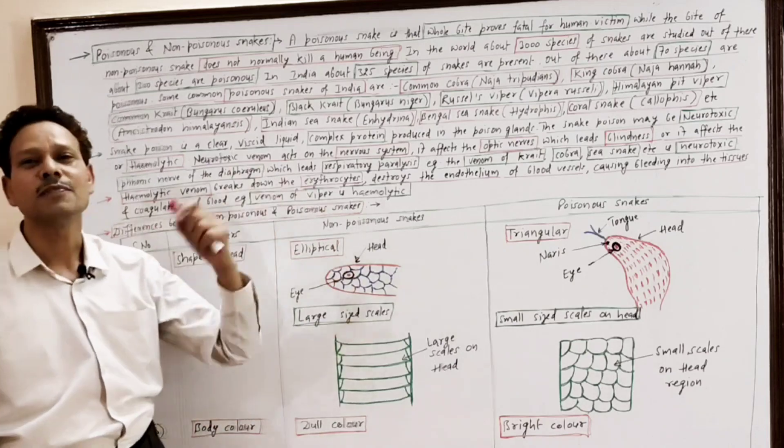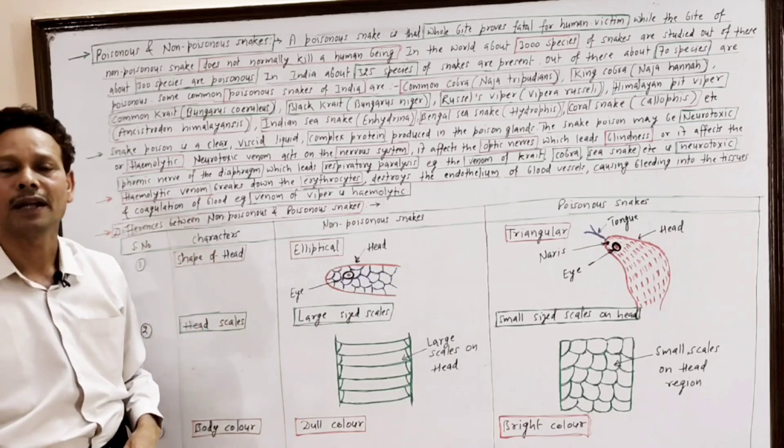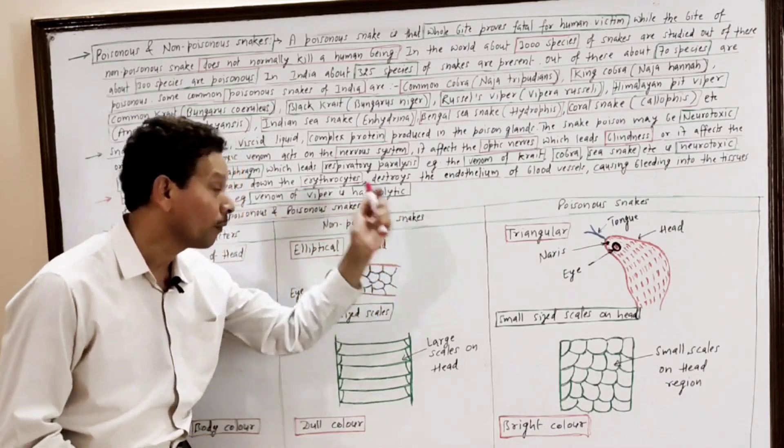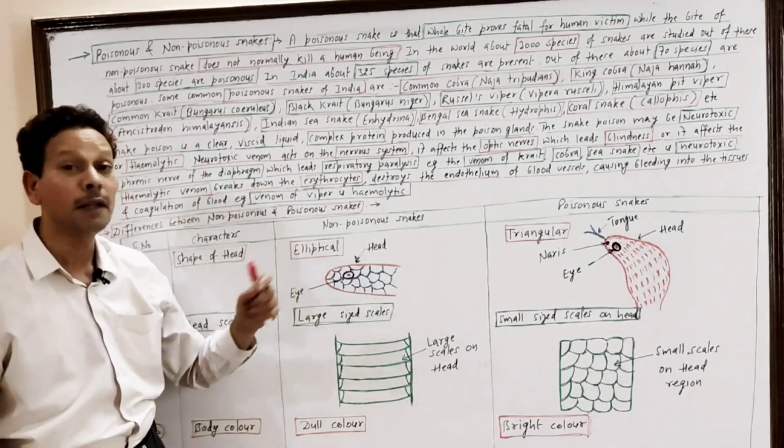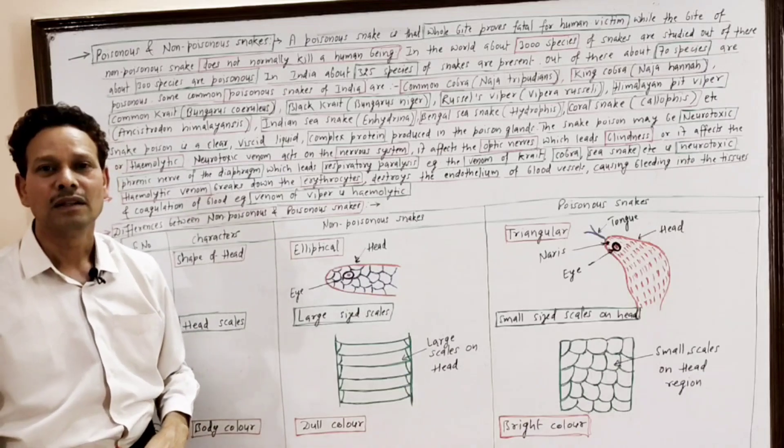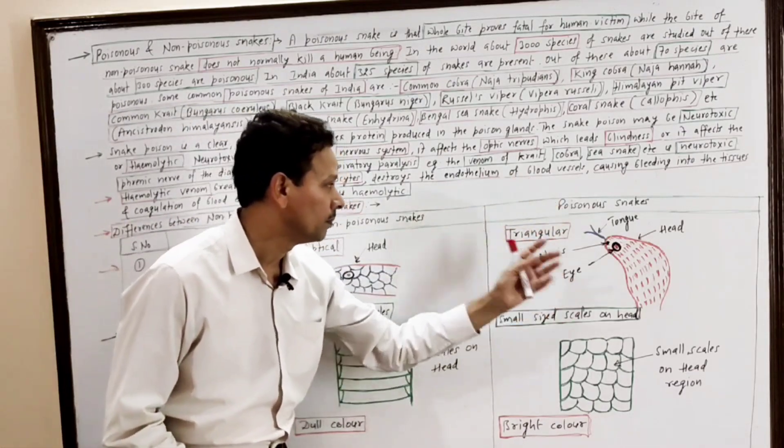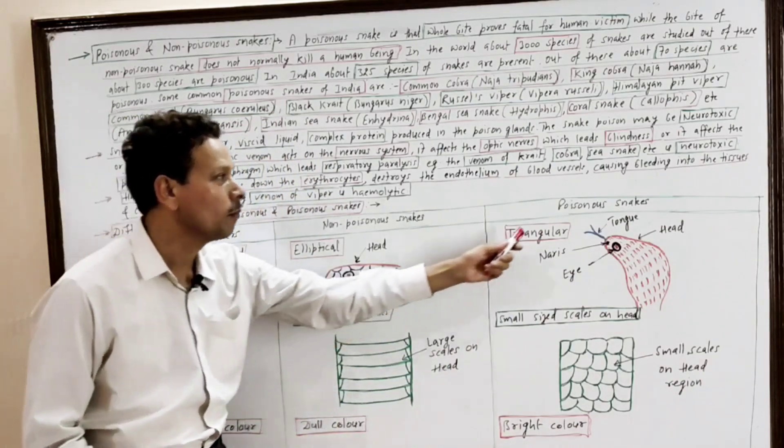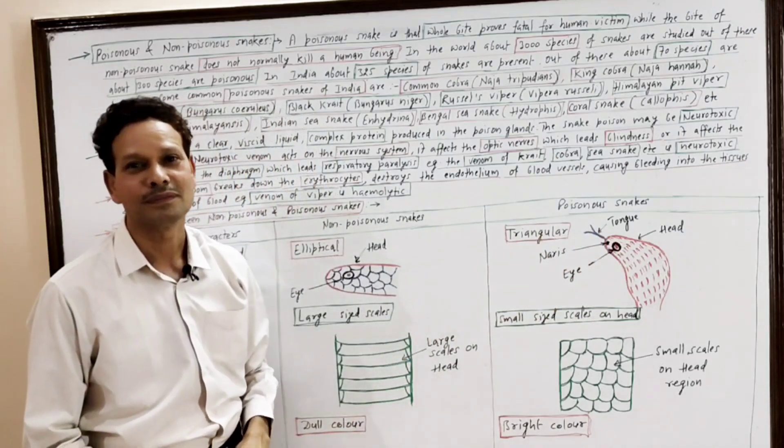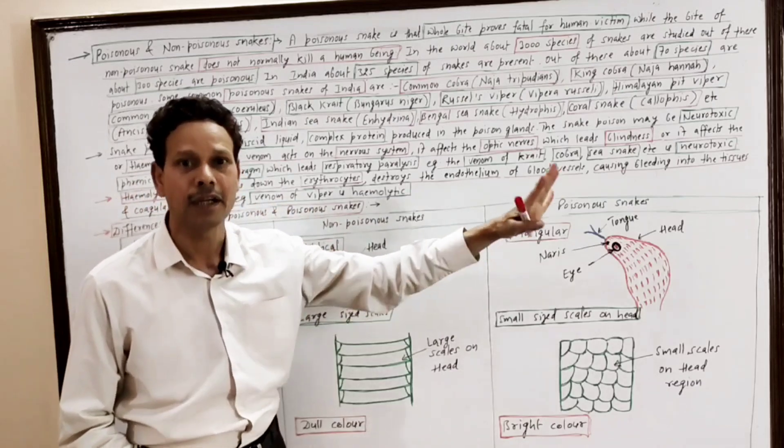These are some differences between poisonous and non-poisonous snakes. First point is shape of head. Note down: the shape of head in case of non-poisonous snakes is elliptical. From this diagram it is very clear the shape is elliptical. While the shape of head in poisonous snakes is triangular.